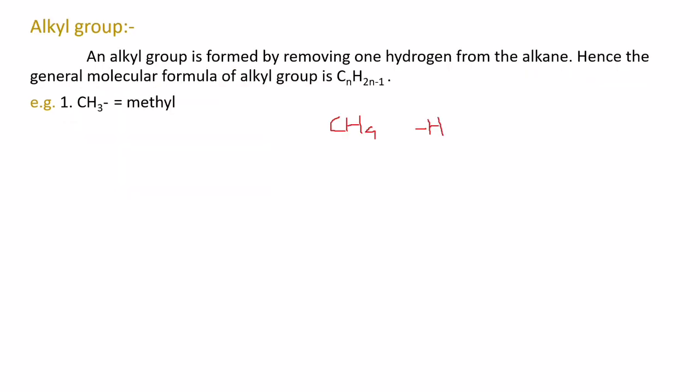Alkyl group: An alkyl group is formed by removing one hydrogen from the alkane. Hence the general molecular formula of alkyl group is CnH2n+1. For example, when we remove one hydrogen from methane CH4, we get methyl group, that is CH3 group.